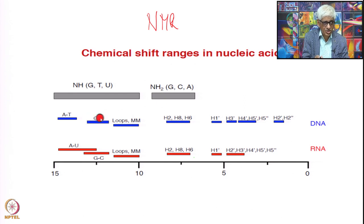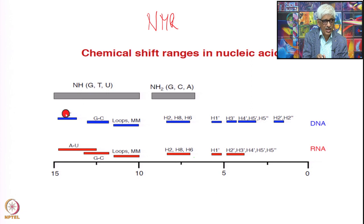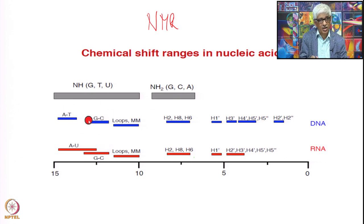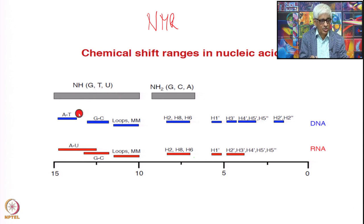The hydrogen-bonded iminos — the G-C pair appears around 12 to 12.5 ppm and the A-T pair appears around 14 to 14.5 ppm. These are all at around pH 7. It is important to mention the pH here because pH plays an important role in determining what sort of base pairing can occur, as there is protonation and protons are exchanging. Remember — these are exchangeable protons.